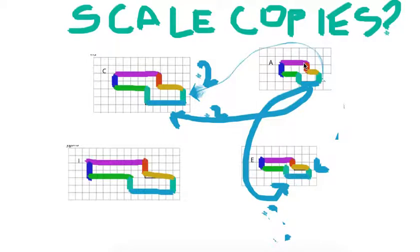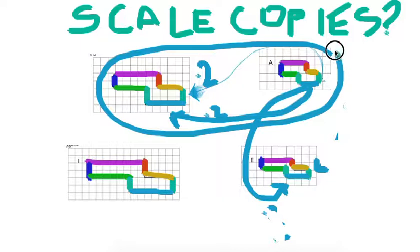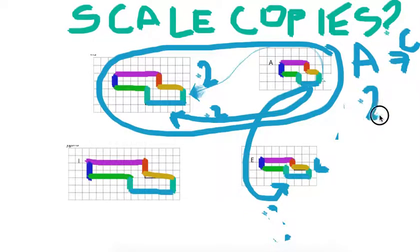And then let's check the other ones. Across the top, we have three. And across the top over here, we have six. That would also be times two. So then these two are scale copies, where the scale factor from A to C would be times two.